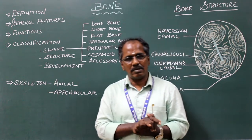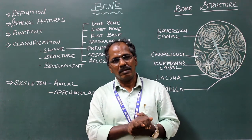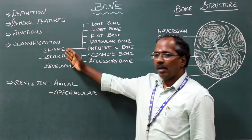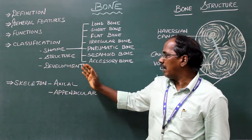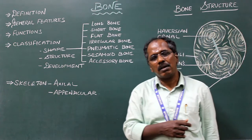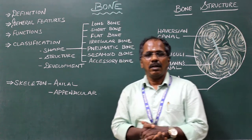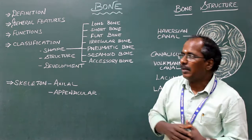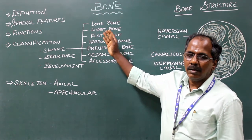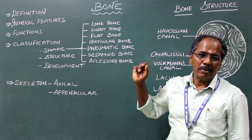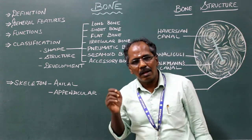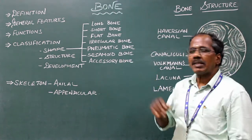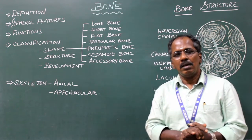Classification of bones: bones may be classified according to shape, according to structure, and according to development or ossification. According to shape, the bones are classified into long bone, short bone, flat bone, irregular bone, pneumatic bone, sesamoid bone and accessory bone.